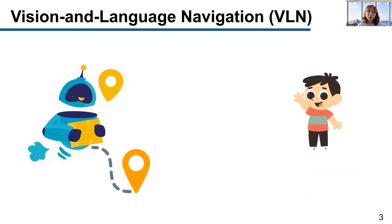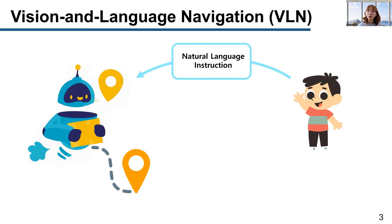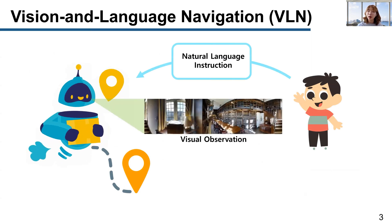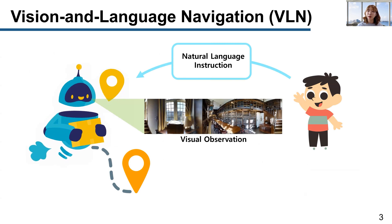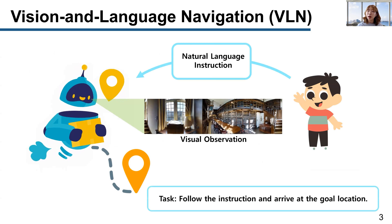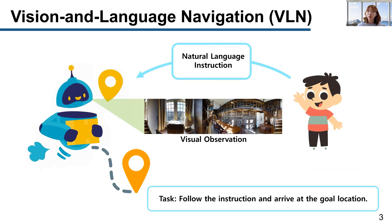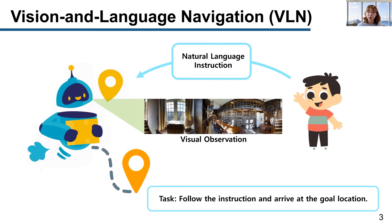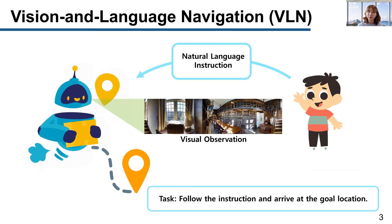So what is VLN? In VLN, a person gives a natural language instruction to a robot, and the robot can perceive visual observations from the environment. The task of the robot is to follow the instruction and arrive at the goal location. The ultimate goal of VLN is to make the agent follow the instruction in unseen environments.